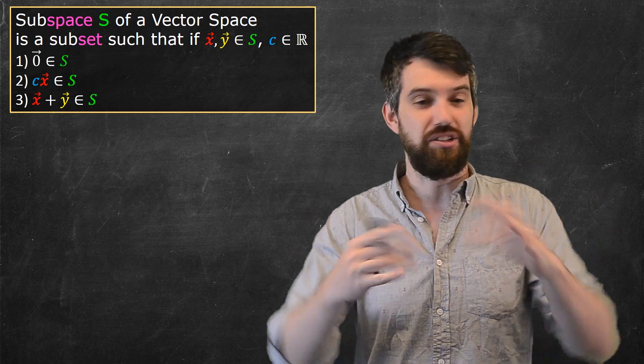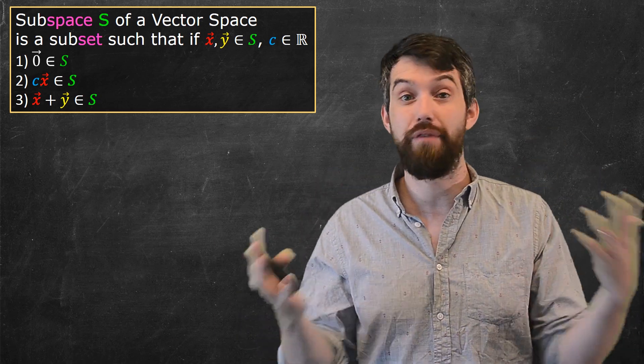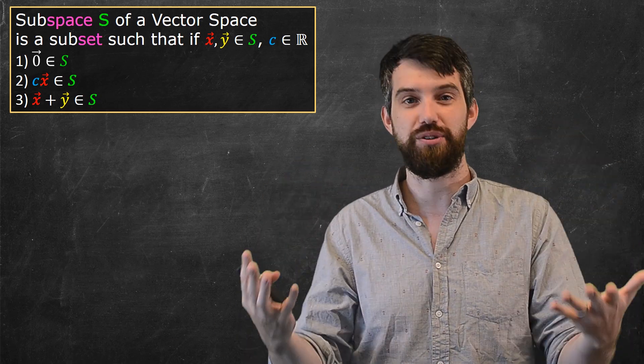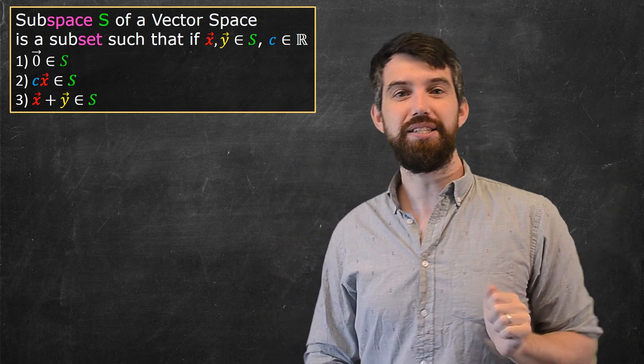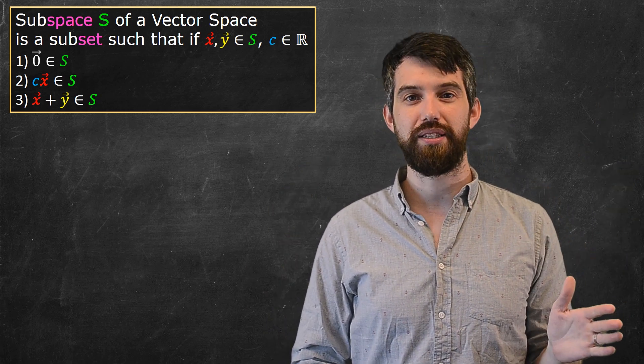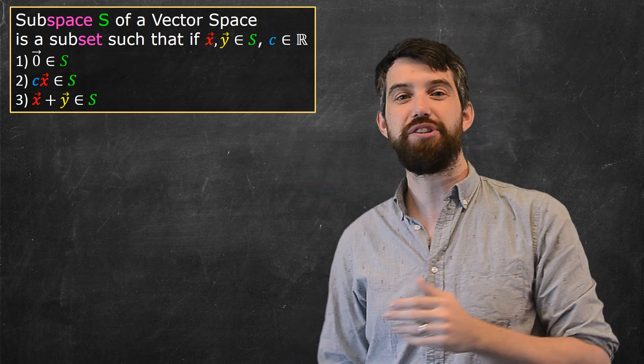And a subspace is this: it is just a subset, so some collection of the points in whatever you're considering. Right now we're talking about a vector space, so we're looking at a subset of the vectors. But your subspace needs to obey a couple of different rules. It needs to have the zero vector be in your set.